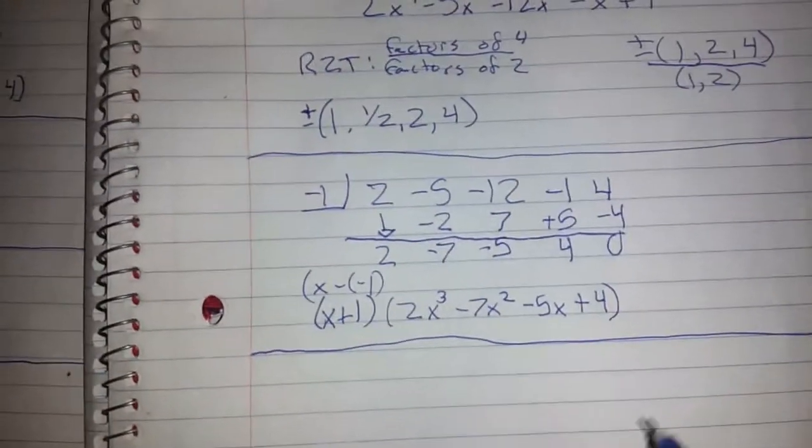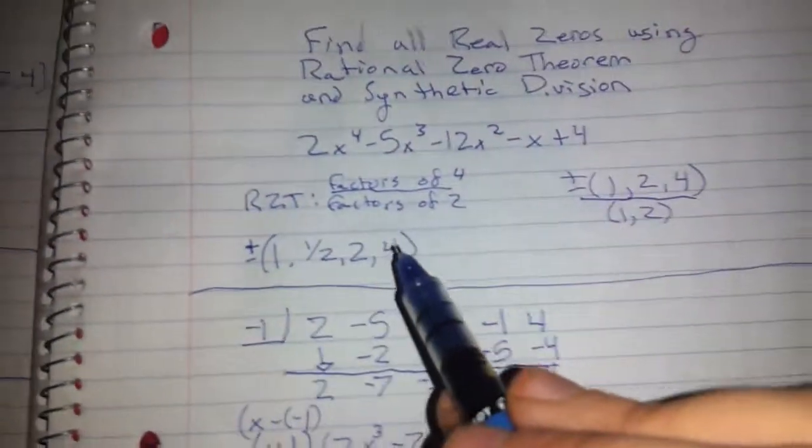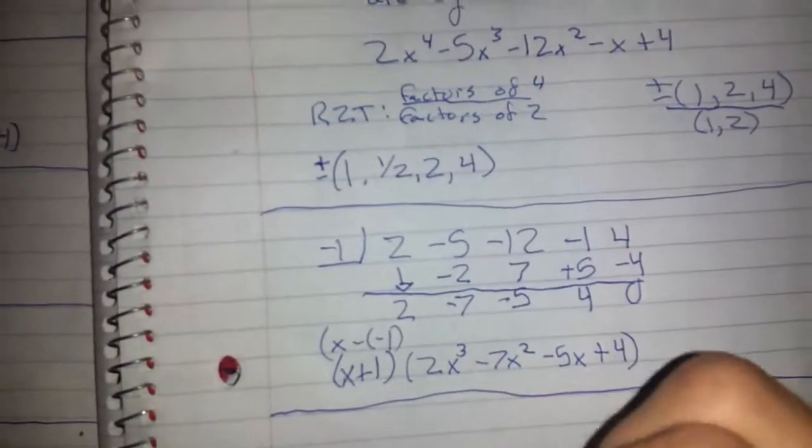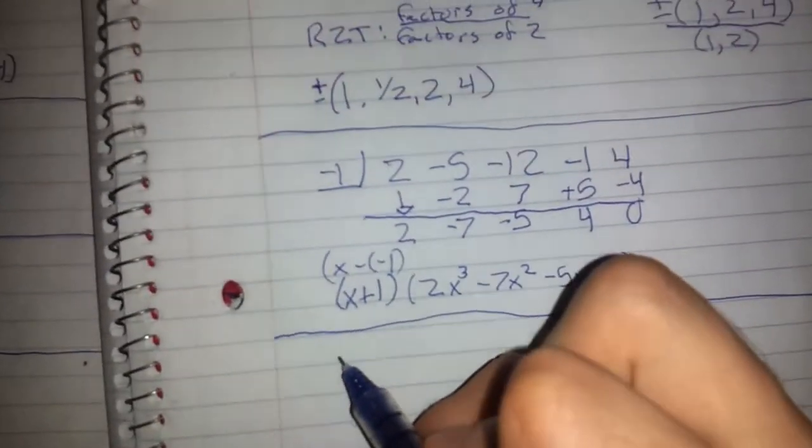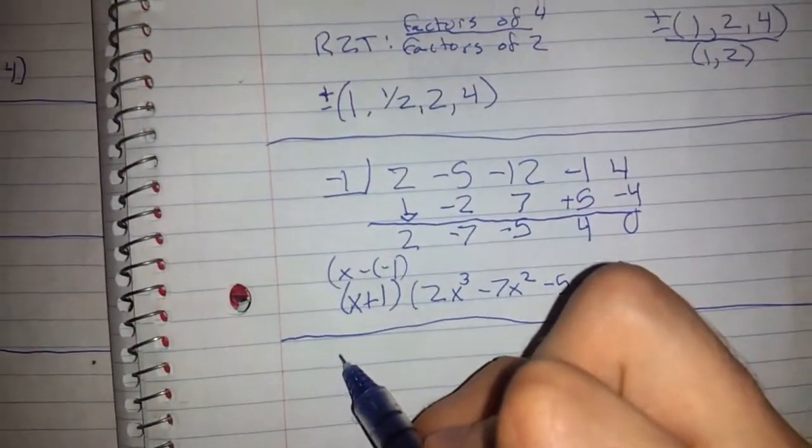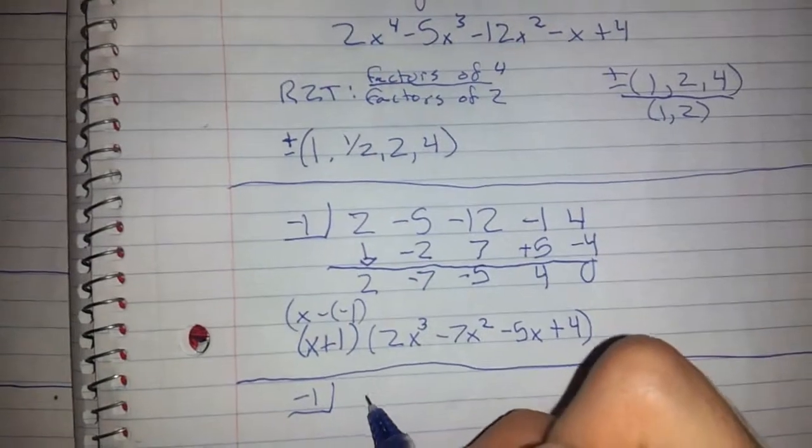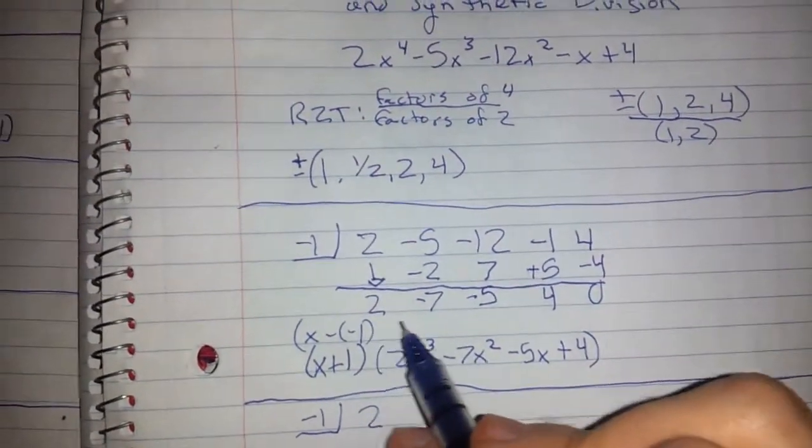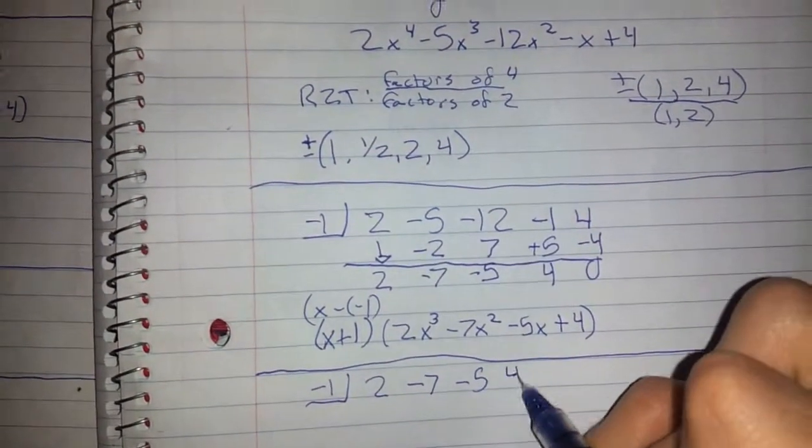Next step here, we're going to keep using synthetic division. We're going to go back to our factors that we got up here with the rational zero theorem. For the sake of time again, I'm just going to go with negative 1. See if this works again. I've already done this problem, and I found out that negative 1 does work again. So let's give it a go. We're going to use these coefficients right here: 2, negative 7, negative 5, 4.